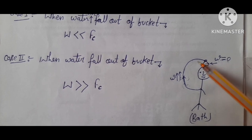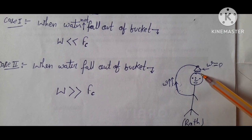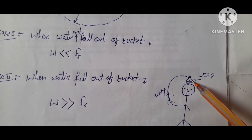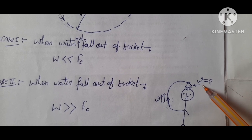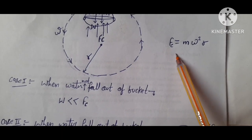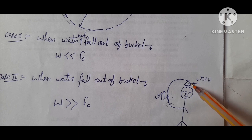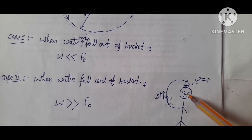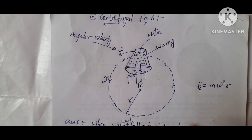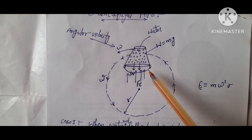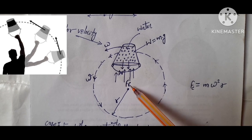So in between here to here, water will not fall from the bucket. But at the top of the head of this boy, omega value is zero, which means centrifugal force will be zero, so the weight of water will cause it to come out on the head of this boy.